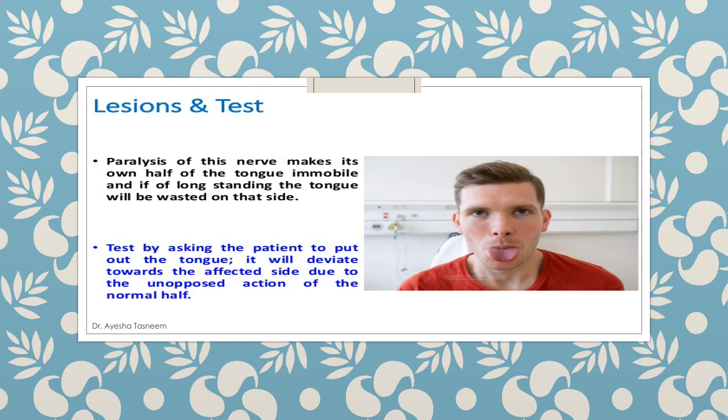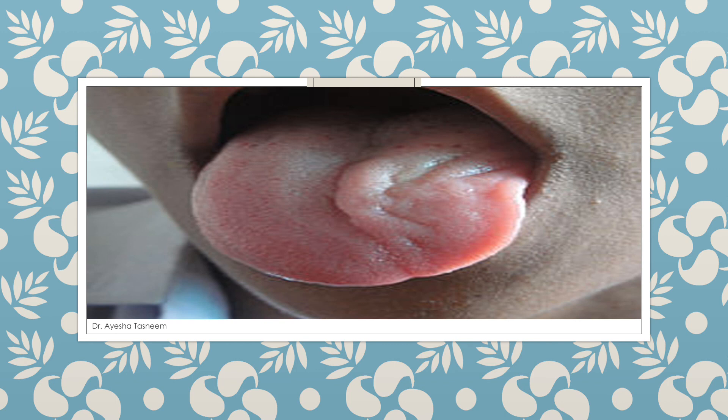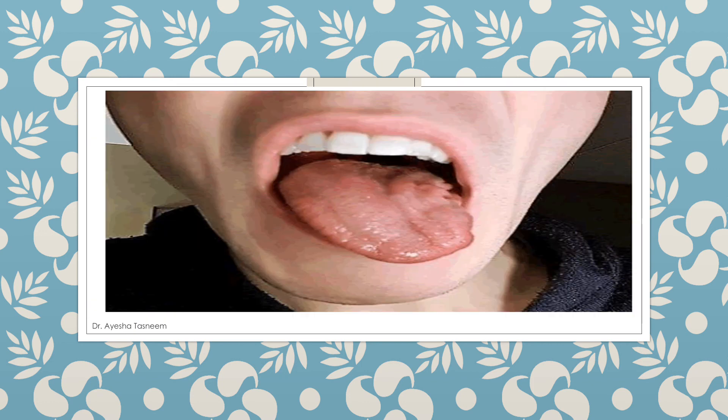The tongue deviates towards the affected side due to the unopposed action of the normal half. Here you can see the deviation towards the affected side, and in another figure you can see the deviation and muscle wasting on the left side of the patient.